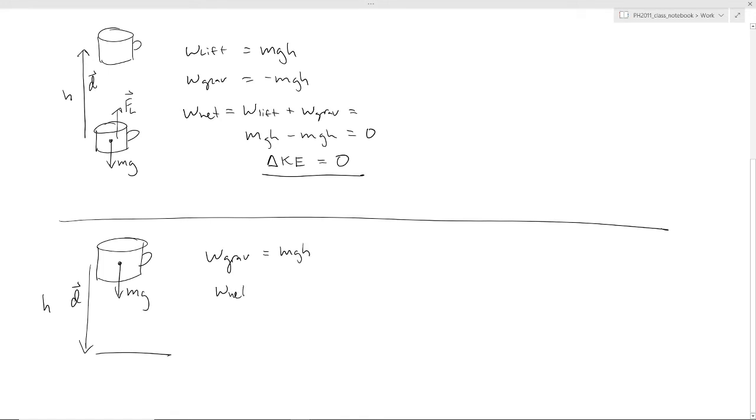Let's apply the work kinetic energy theorem. So the net work is going to be equal to the change in kinetic energy. So that's going to say that mgh is going to equal one half mv final squared minus one half mv initial squared.